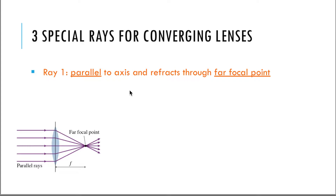The first ray is going to be the one that's parallel to the axis and refracts through the far focal point. Our lenses have a focal point on each side, so I'm going to call the focal point on the left the near focal point and the one on the right the far focal point. This ray uses the definition of the focal point: parallel rays will converge at that focal point.